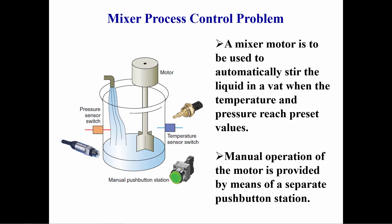This is an example of a simple industrial control process. A mixer motor is designed to operate when a preset pressure and temperature are both met or when a manual push button is pushed.